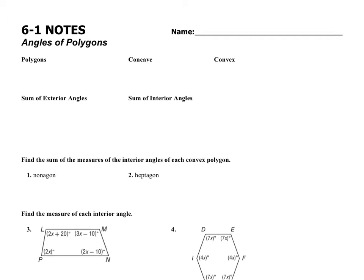Hello and welcome to the 6-1 notes. This is the start of chapter 6 — the study of polygons. A polygon is a many-sided figure. This section is about angles of polygons, so we're going to be able to figure out the sum of the exterior angles and the sum of the interior angles. Let's start off with some vocabulary before we begin.